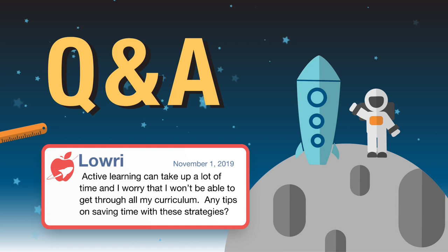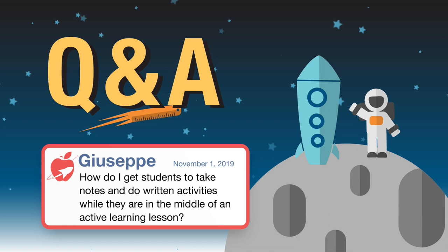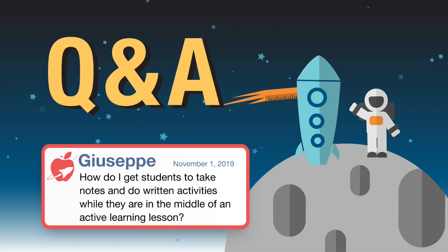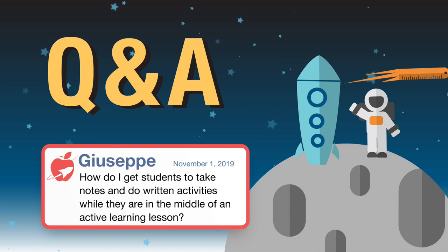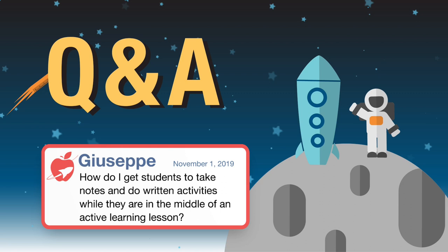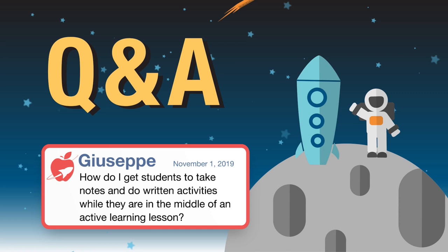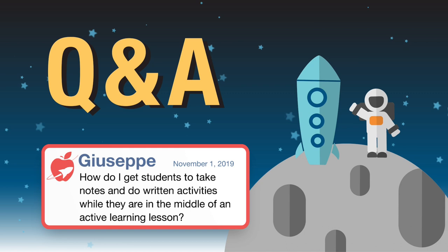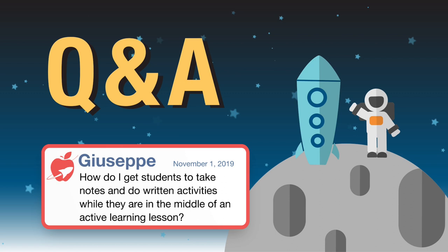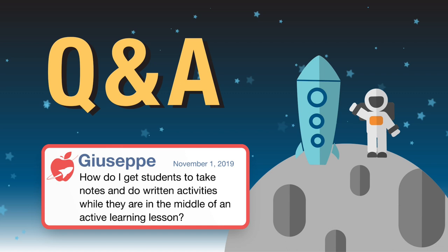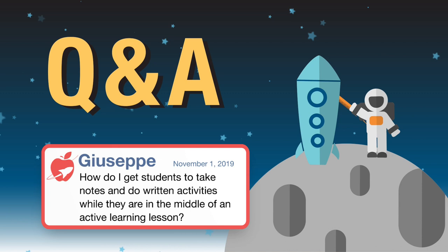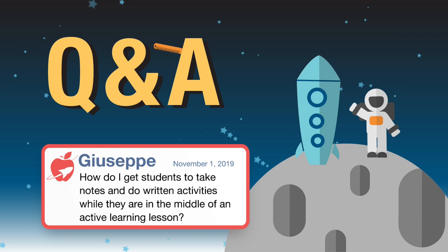Giuseppe asks: how do I get students to take notes and do written activities while they are in the middle of an active learning lesson? Rachel: one way would be to set up tables — while students are mobile and standing, they should have a place to park their materials anyway and can take the time to write when they are at the table. You might also consider blocking out some time for students to take notes either before or after the spoken part of the activity. Give them an opportunity to take notes before and after the active learning itself so that it's not one more thing they're negotiating. If you have a one-to-one classroom, consider letting students take their laptops or Chromebooks with them so they can collaborate at tables as they go along.